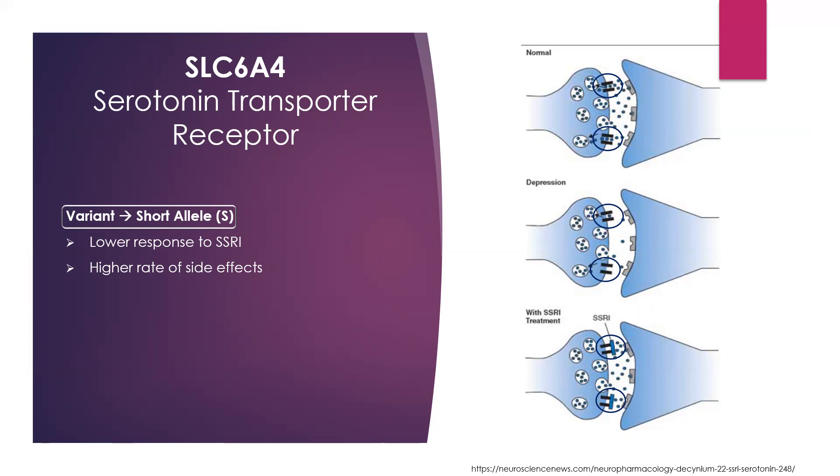When we're looking at an SSRI in this example, we should not only be looking at SLC6A4, but also 2C19, 2D6, and all these combinations to make a clinical judgment instead of just this pharmacodynamic gene.